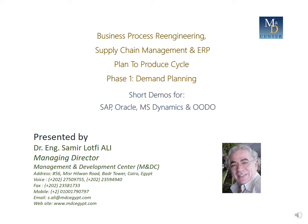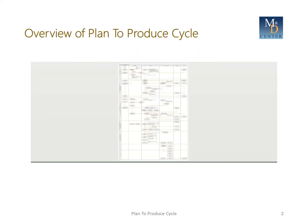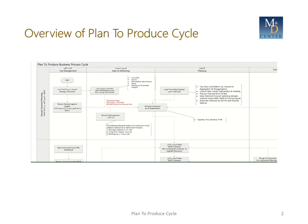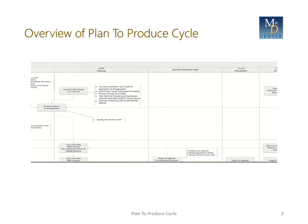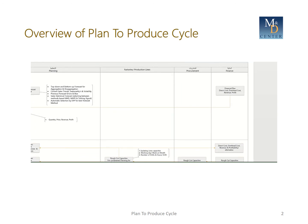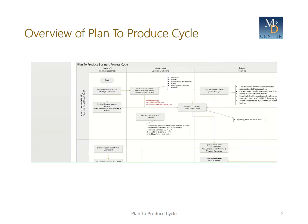We will show you short demos for SAP, Oracle, and Microsoft Dynamics. In the plan-to-produce SIPOC, it consists of columns and rows. Columns represent the main functions and stakeholders that participate in the plan-to-produce cycle, such as top management, sales and marketing, planning, factories and production lines, procurement, and finance.